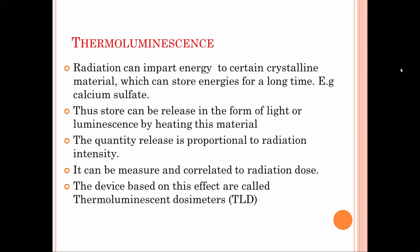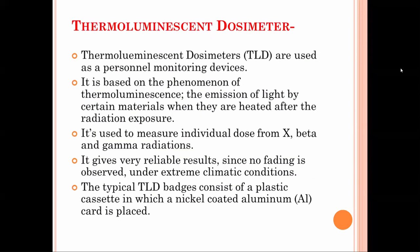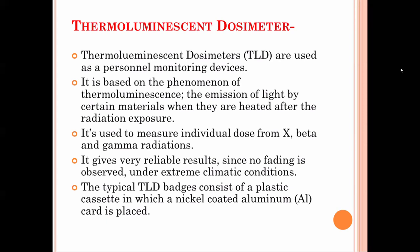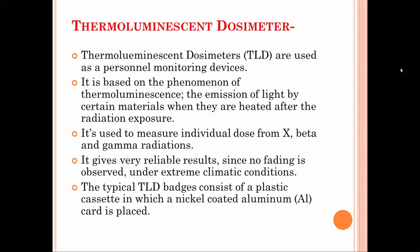The quantity of radiation is proportional to the radiation intensity, which can be measured and correlated to dose. A device based on the effect of thermoluminescence is called a thermoluminescence dosimeter. The TLD is used as a personal monitoring device and is based on the phenomenon of thermoluminescence — emission of light by certain material when heated. It is used to measure individual dose from X-ray, beta, and gamma radiation.